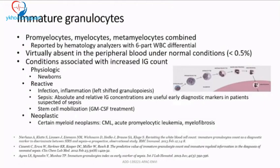In cancer patients or those with bone marrow suppression, G-CSF or GM-CSF administration increases the IG count. In malignancies such as CML, AML, myeloid neoplasms, or myelofibrosis, an increase in IG is seen, which may extend to promyelocytes or blasts. Smear review is important, but flagging the IG component is critical.